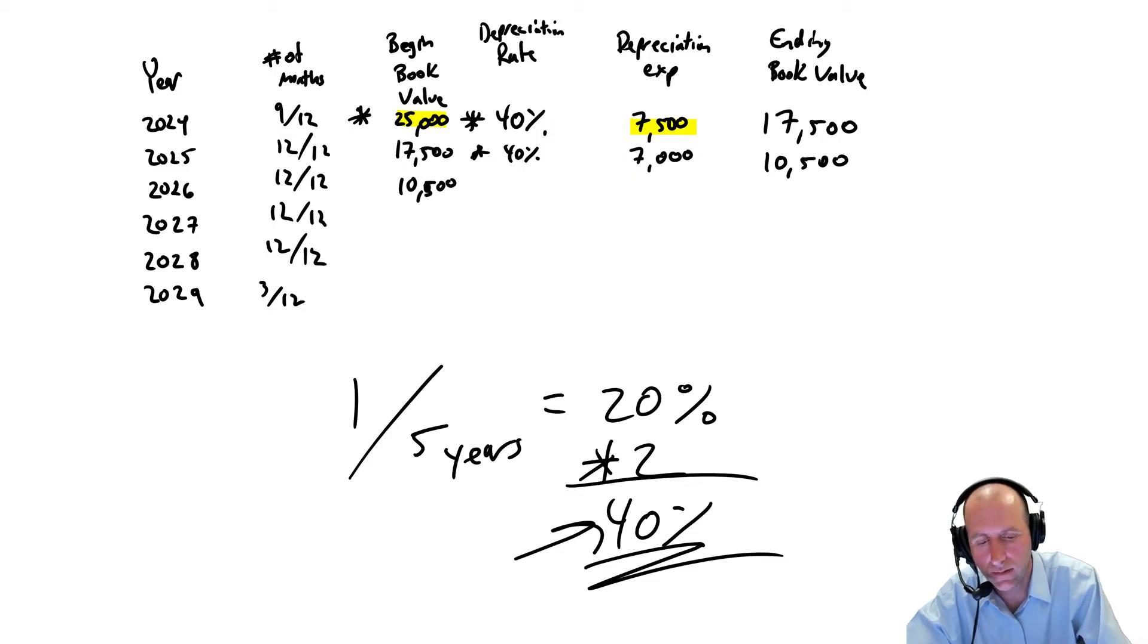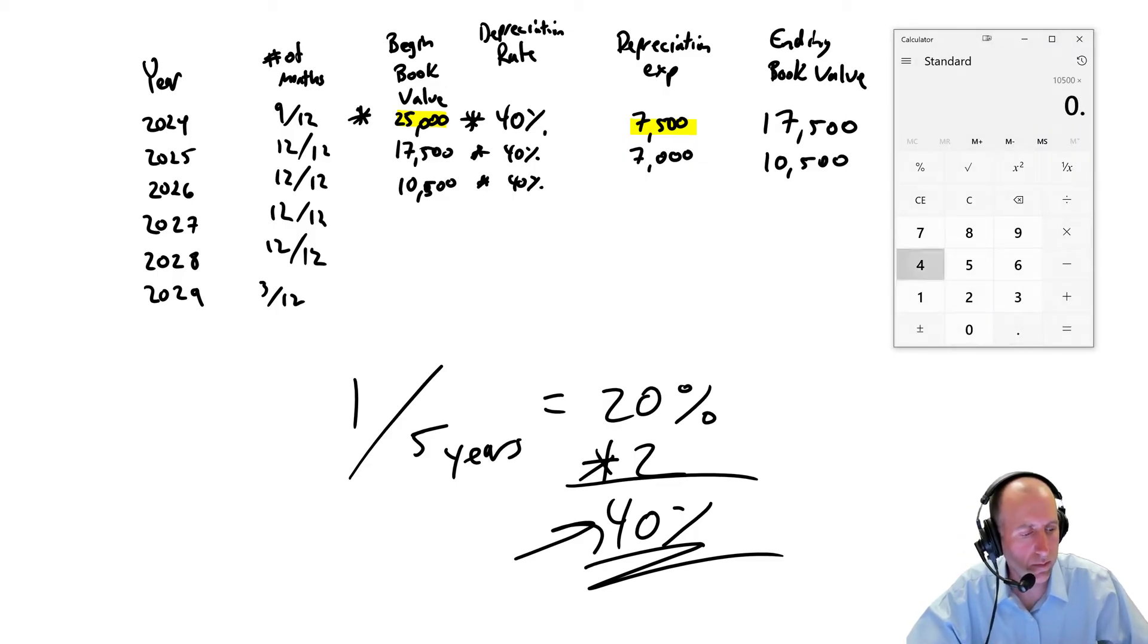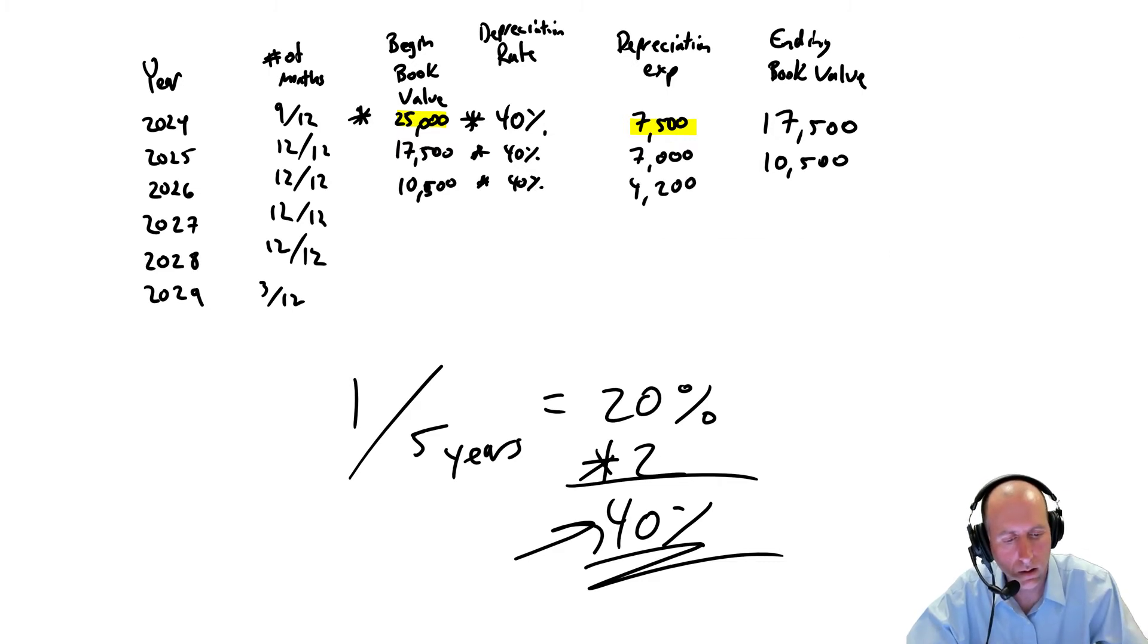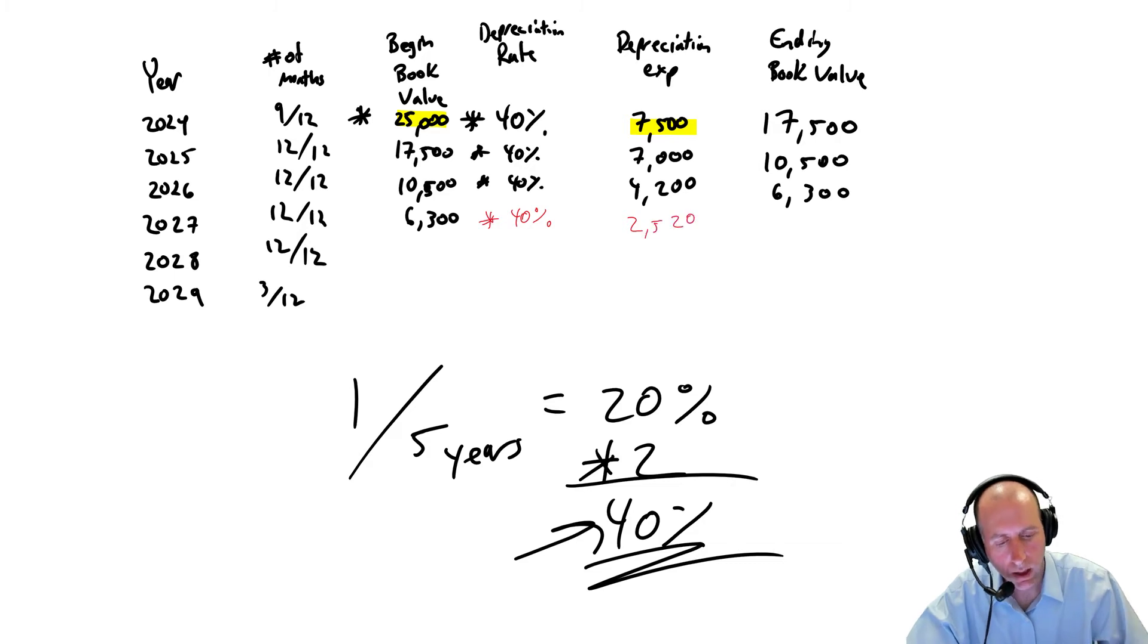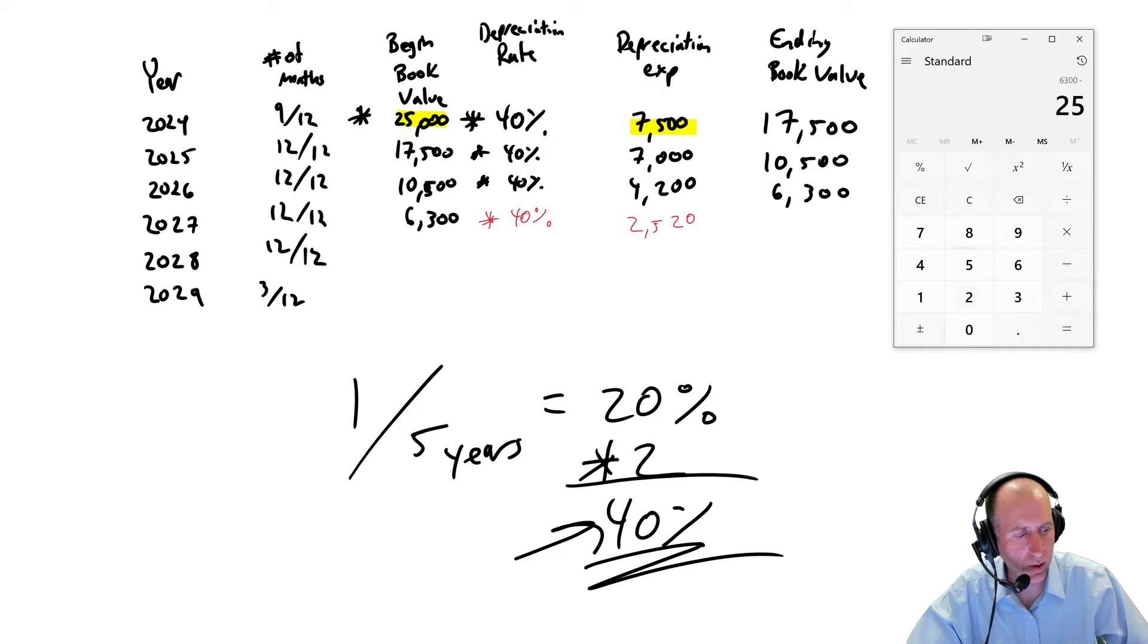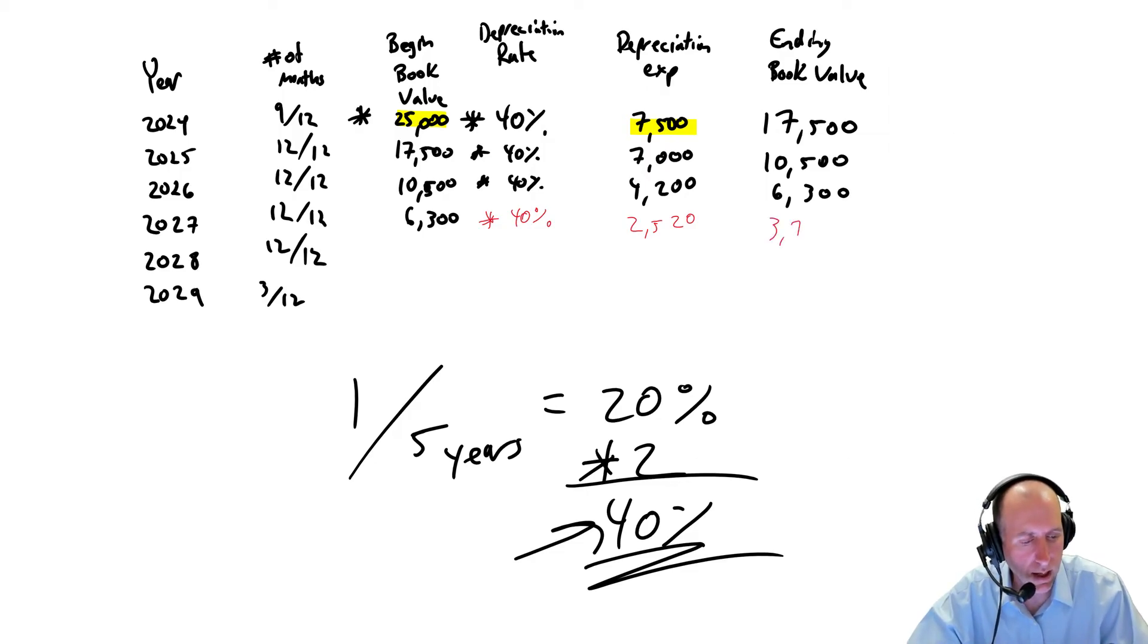Take that as my next period. $10,500 times 40%, which is $4,200. And $10,500 minus $4,200 is $6,300. I'm going to have a problem here in just a moment. I'm going to start writing this in red. Do not write what I write here. There's about to be a problem. $6,300 times 40% is $2,520, and $6,300 minus $2,520 is $3,780. And I have a problem. This is where double declining balance can get a little tricky.